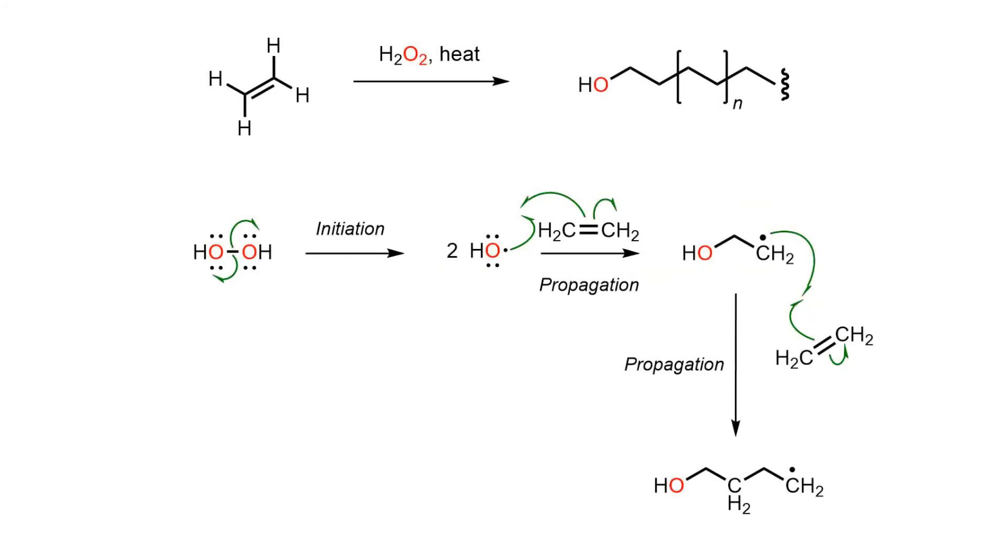The new radical is then limited in its options, so addition to a second molecule of alkene occurs and the chain begins to grow through a propagation step.